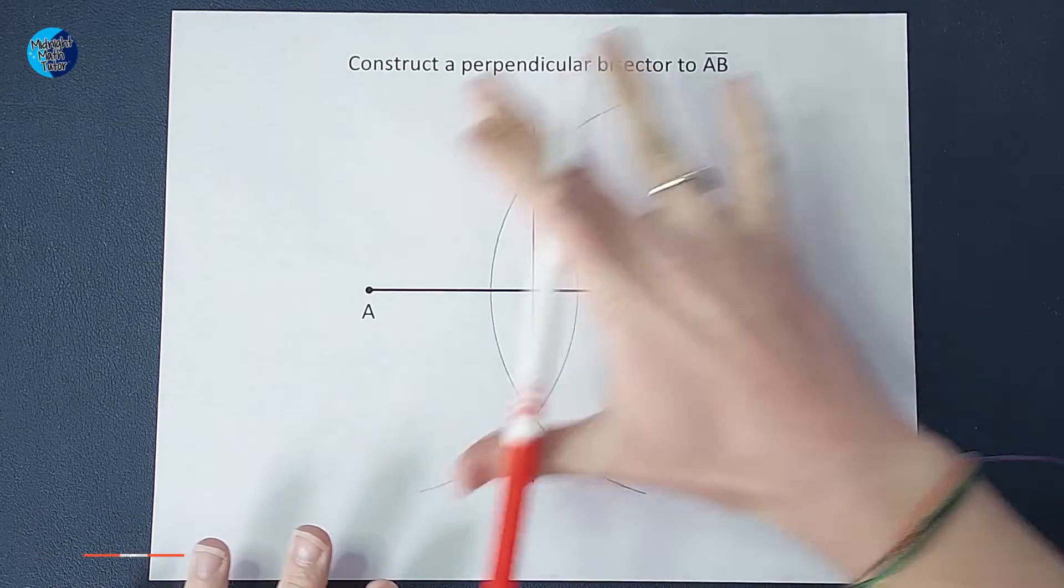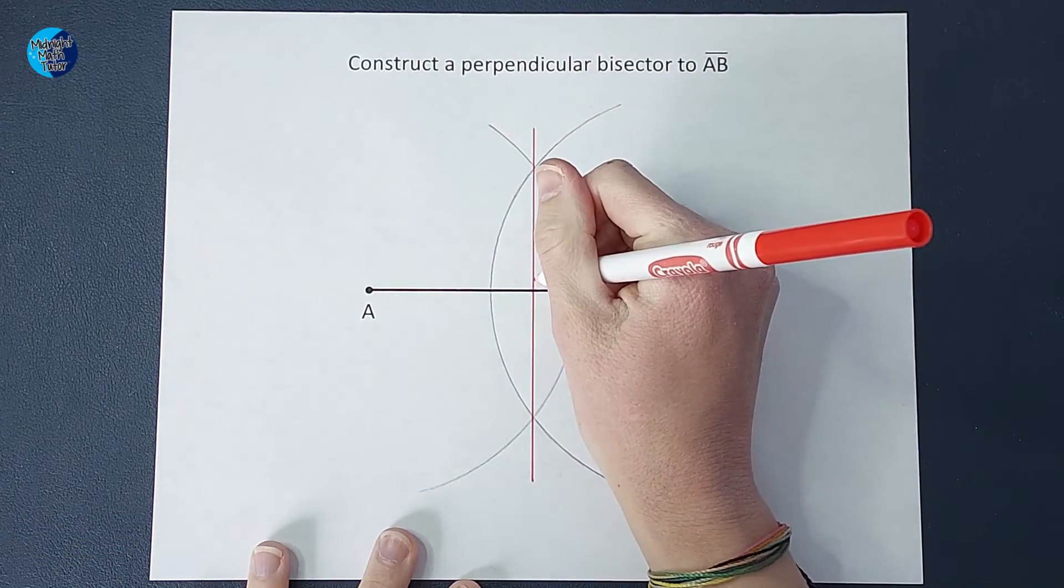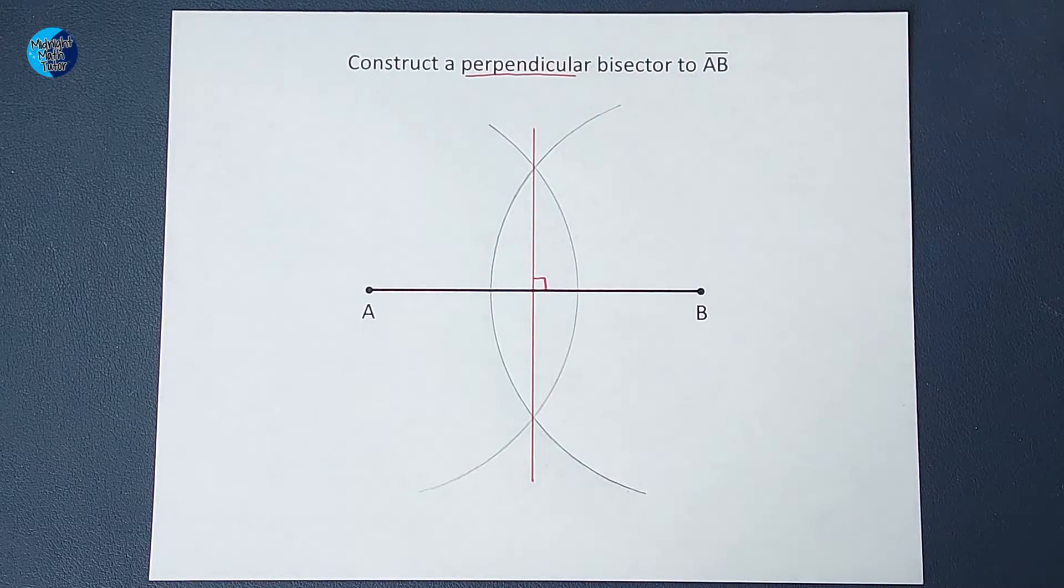Of course, if you wanted to, if the swoops are distracting, you can erase them if you'd like. But this is my 90 degree angle. That is the perpendicular. And the bisector is that it's in half.